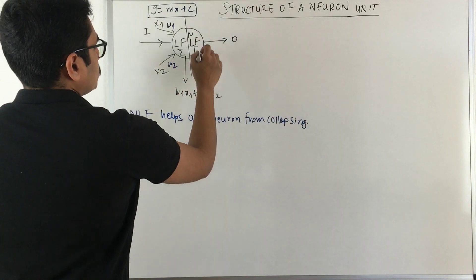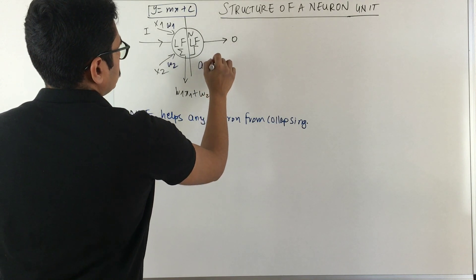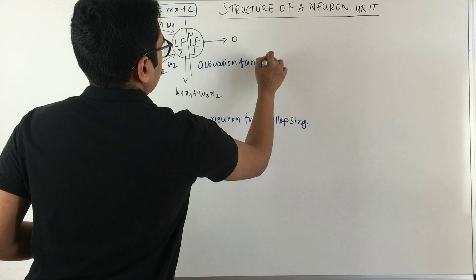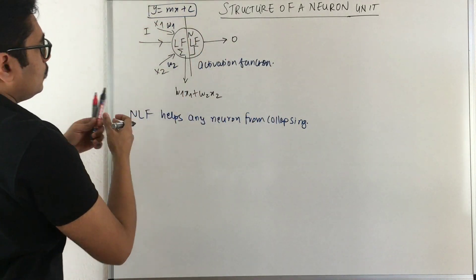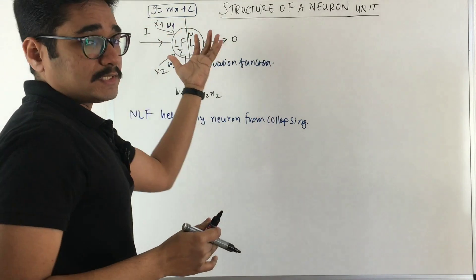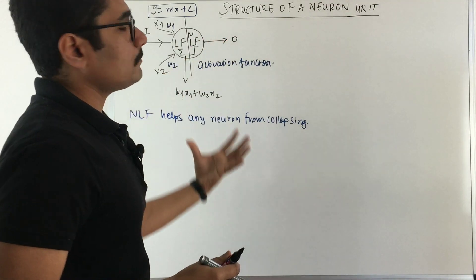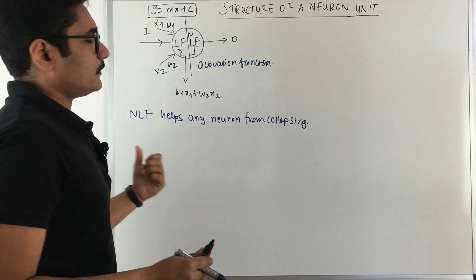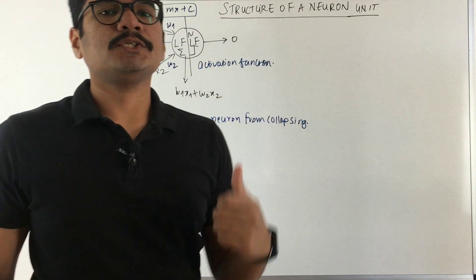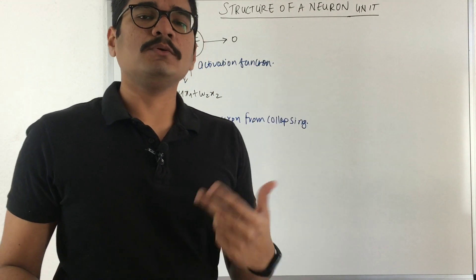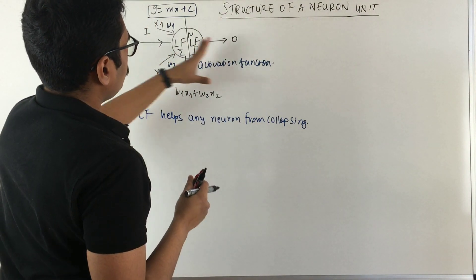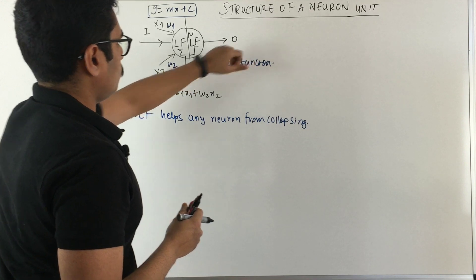Nonlinear function helps any neuron from collapsing. This nonlinear function NLF is also called as sometimes the activation function. Basically whatever comes from this particular left hand side, it will just activate that according to some predefined function which you put. There are different kinds of activation functions like sigmoid, you have tanh, you have ReLU, leaky ReLU and many of them.